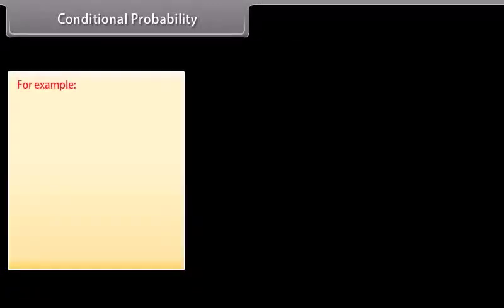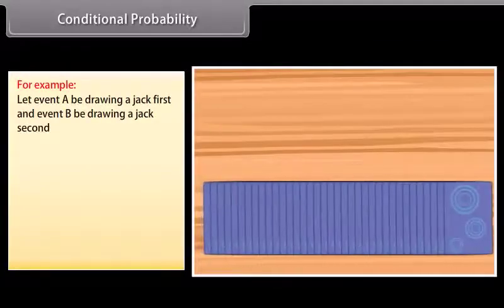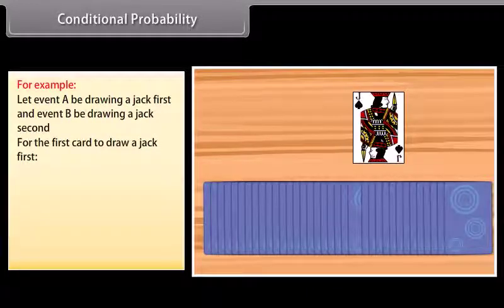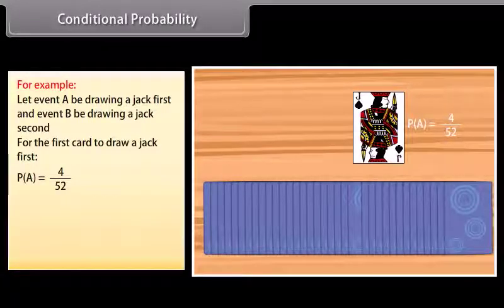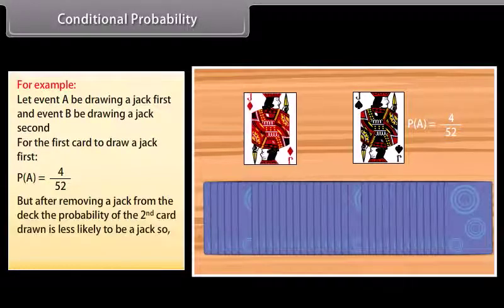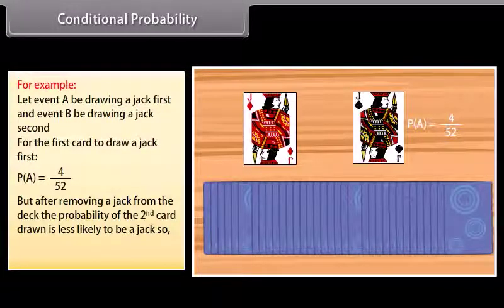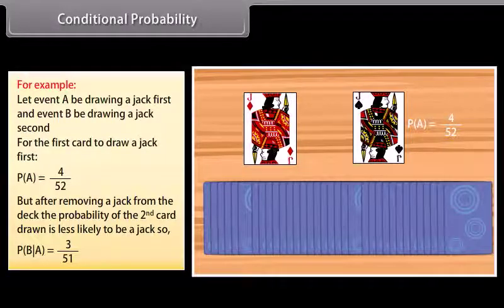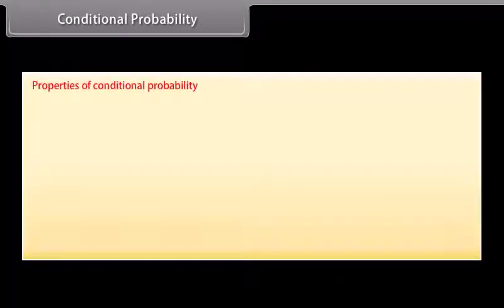For example, let event A be drawing a jack first and event B be drawing a jack second. For the first card, the probability of drawing a jack is 4 by 52. After removing a jack, the probability of the second card being a jack is less likely, so the conditional probability of B given A is equal to 3 by 51.